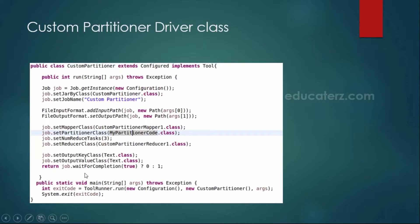The rest of the program remains the same. You can use ToolRunner or a plain job — either is fine. The only two additional lines for custom partitioning are job.setPartitionerClass and job.setNumReduceTasks, set according to your need. If you require 5 different output files, you should set the number of reducer tasks to 5.